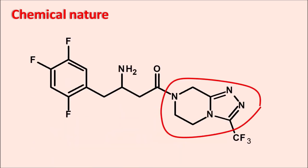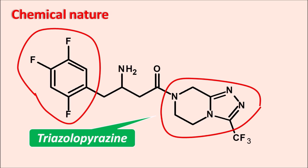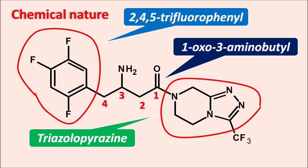Regarding the chemical nature of cetagliptin, its structure contains a heterocyclic ring system — a pyrazine ring fused with a triazole ring, forming the triazolopyrazine ring system. Another ring system is a phenyl ring with three fluorine groups, making it the 2,4,5-trifluorophenyl ring system. These two ring systems are connected by an alkyl bridge: a butyl chain with an oxo group at position 1 and an amino group at position 3.